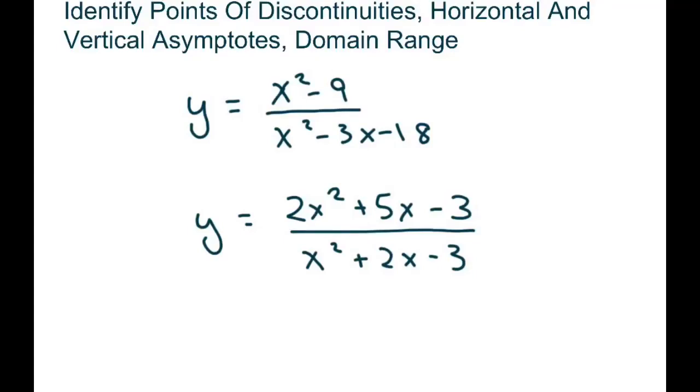Hi everyone. This is part 3. We're going to identify points of discontinuity, horizontal and vertical asymptotes, and domain and range. And these are the two problems we're going to do.